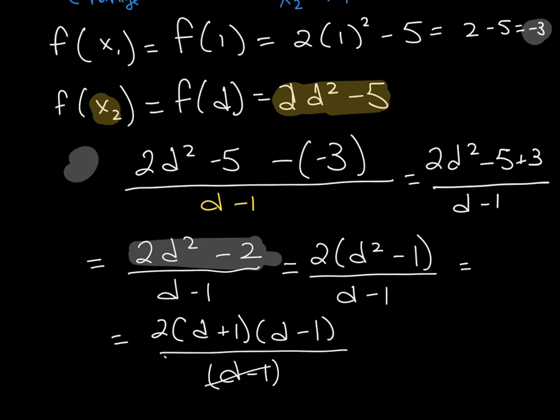Now I can go ahead and cancel out the d minus 1, and I'm left with 2 times d plus 1. And that is the answer to this question.